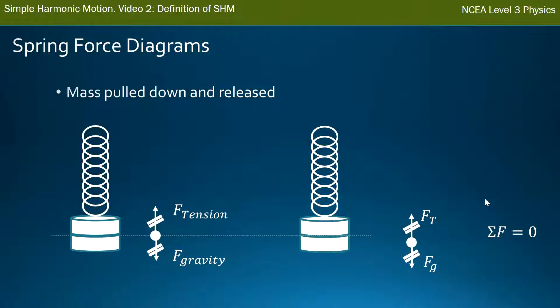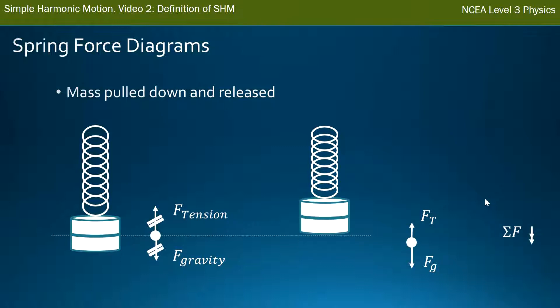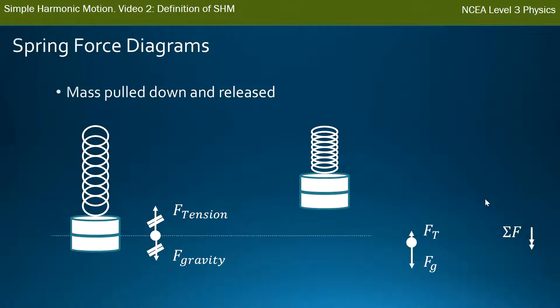It keeps moving upwards, now above the equilibrium point. The spring is under even less tension — it's a bit more compressed — so the tension force is smaller than gravity, and the total force is now downwards. At the highest point it bounces up to, the tension force is at its smallest, and the total force downwards is at its largest because gravity is much bigger than the tension force.